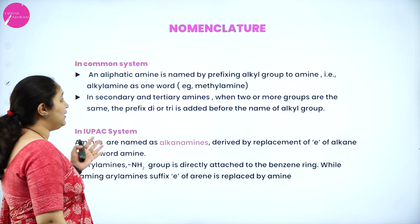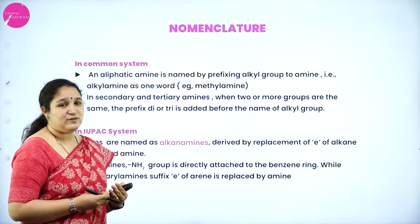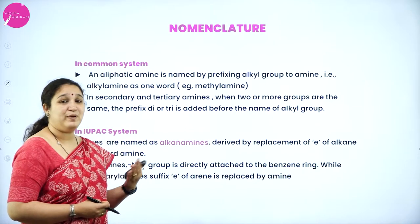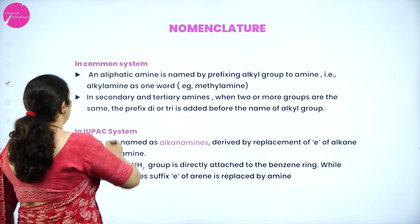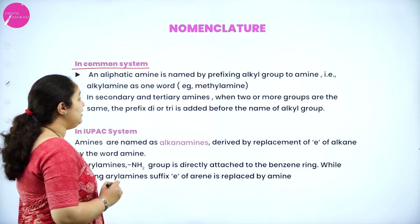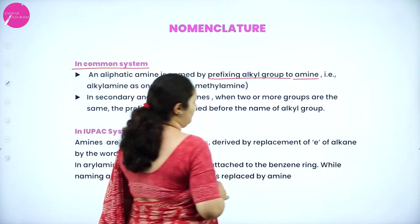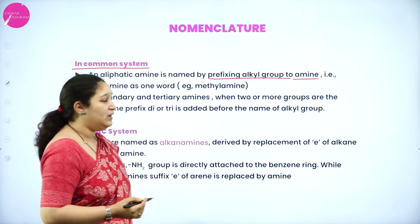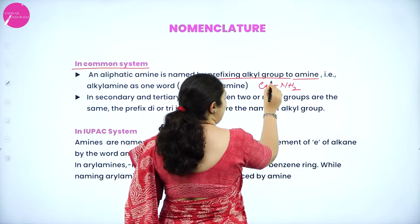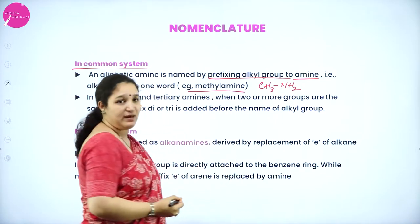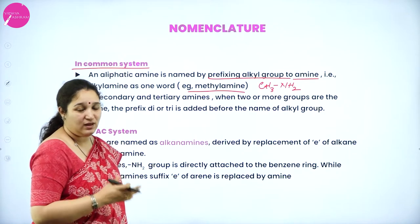Next is about the nomenclature of amines. There is a little difference in nomenclature compared to other chapters. First, let's see the common system of nomenclature. In the common system, we prefix the alkyl group to the word amine. For example, CH3NH2 has a methyl group and amine, so it is methyl amine. The alkyl group is prefixed to the word amine in common naming.